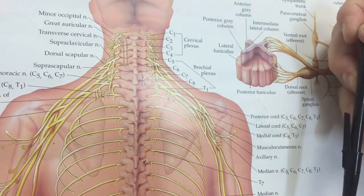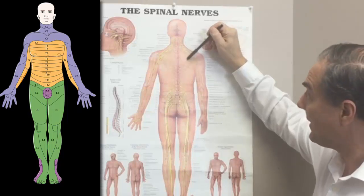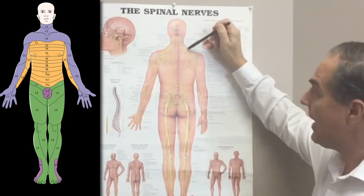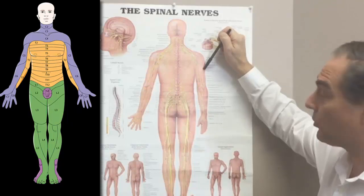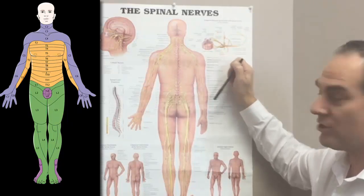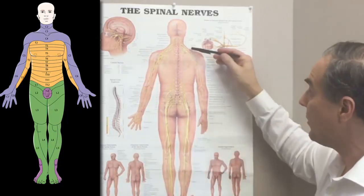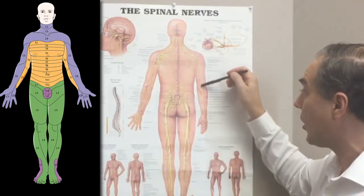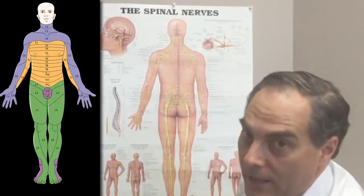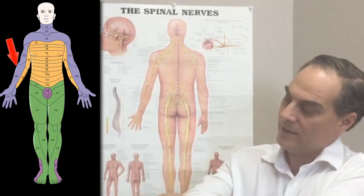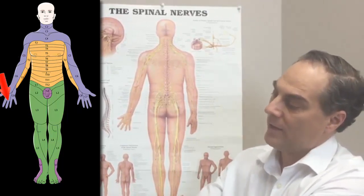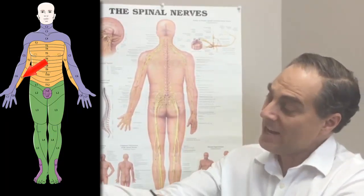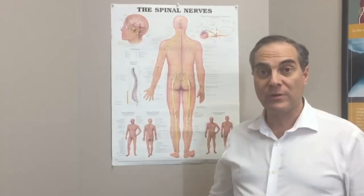Brachial means arm, and plexus means a bundle of nerves. The brachial plexus is in the shoulder girdle area, and it branches off into different nerves: the median nerve, the ulnar nerve, and the radial nerve. These nerves travel into the arm and eventually branch out into smaller nerves. That is how nerve distribution originates from the neck into the shoulders, arms, hands, and fingers — with some nerves going to the lateral arm, some to the middle, and some to the medial inner part.